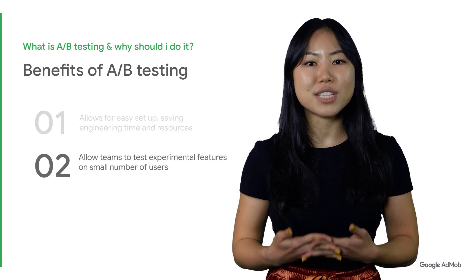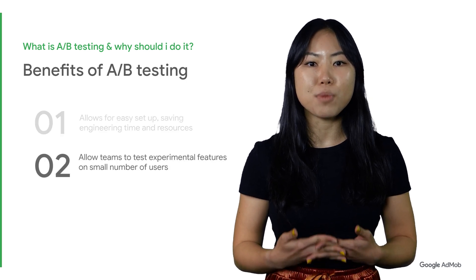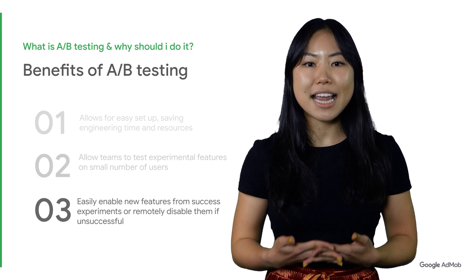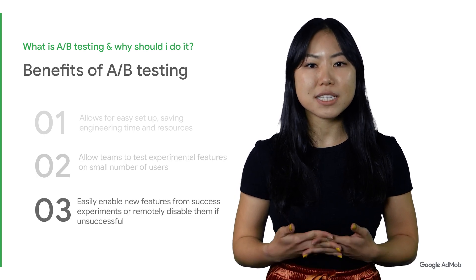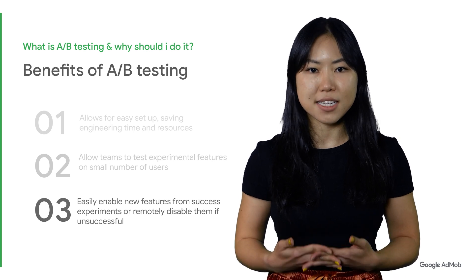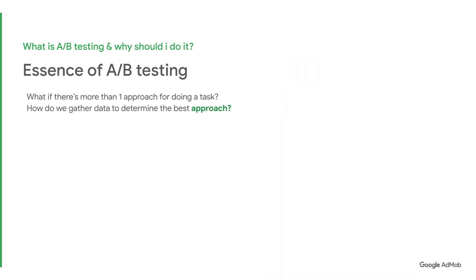This allows teams to test experimental features on a small number of users, and easily enable new features from successful experiments or remotely disable them if they are unsuccessful. A-B testing is used when there is more than one approach for doing a task and you have a feeling that one of those approaches is better than the others. To find the best approach, you will need to gather data and measure the outcome.